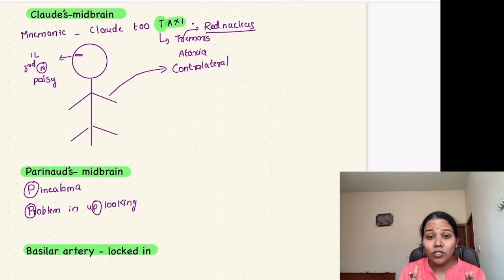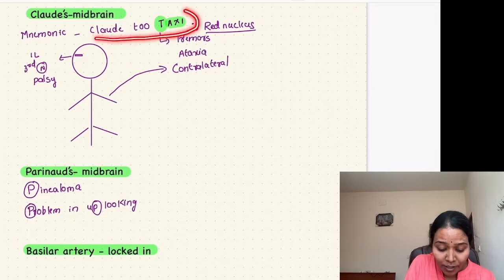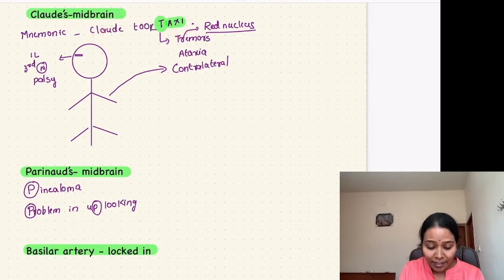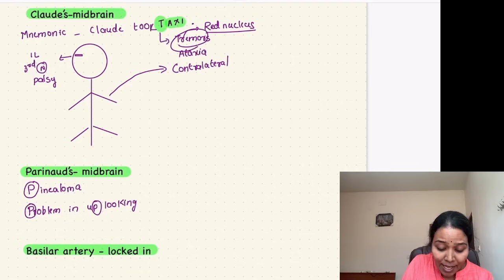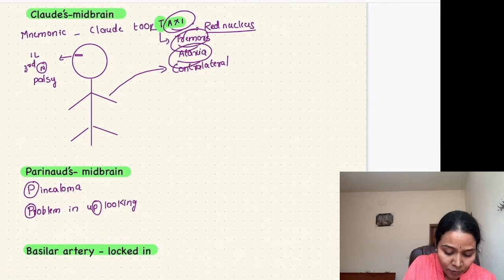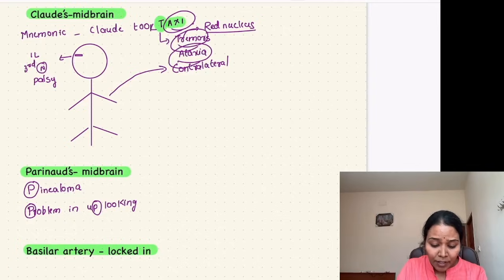The second midbrain syndrome is Claude's syndrome. Use the mnemonic 'clod took taxi': T stands for tremors and 'axi' stands for ataxia. In Claude's syndrome, you will see contralateral tremors and ataxia due to involvement of the red nucleus, along with ipsilateral third nerve palsy.